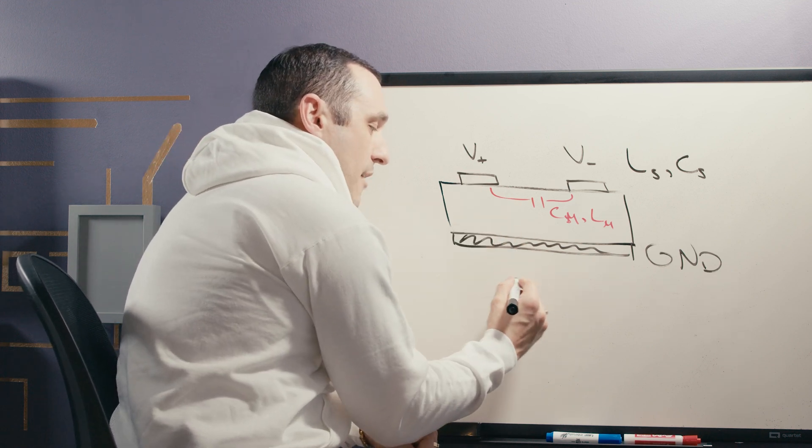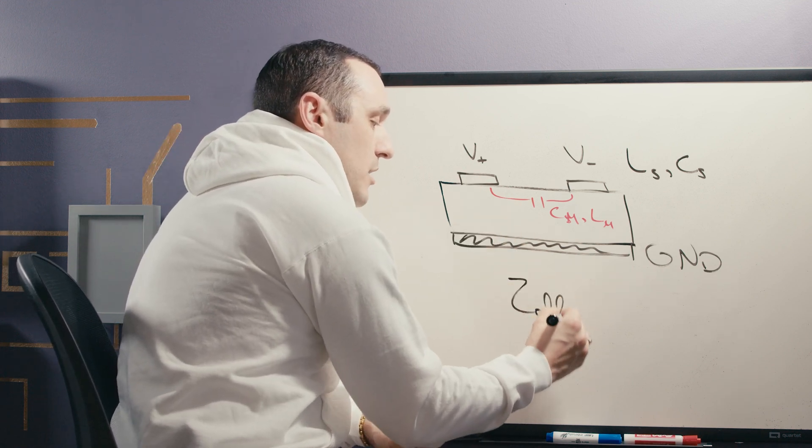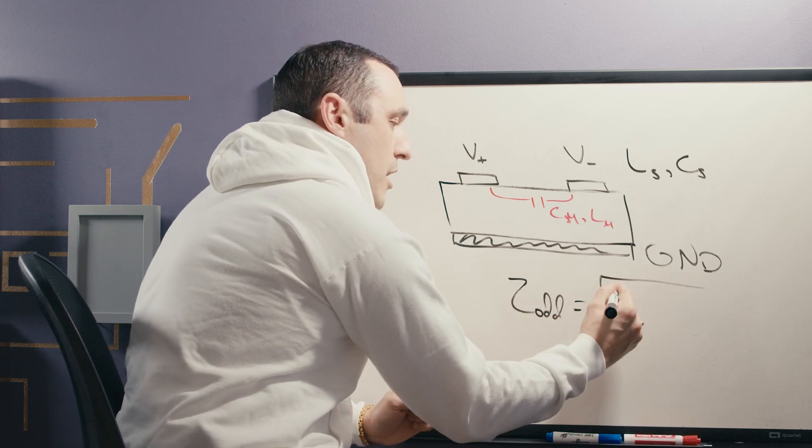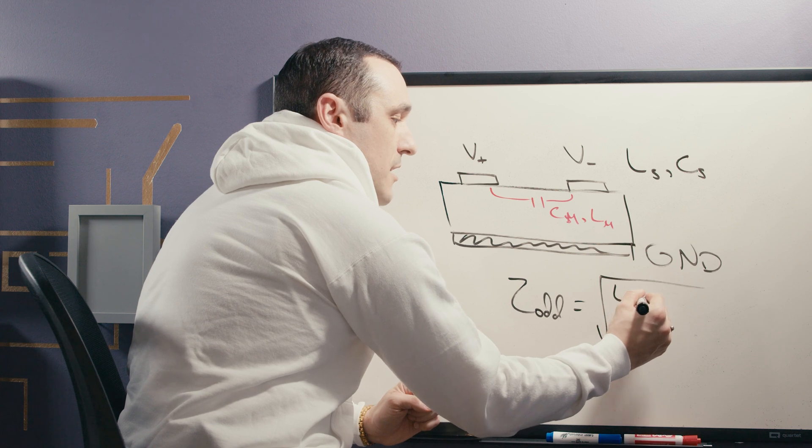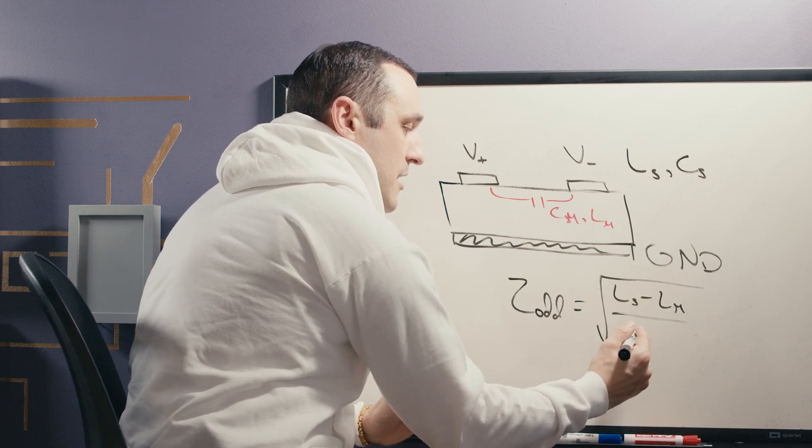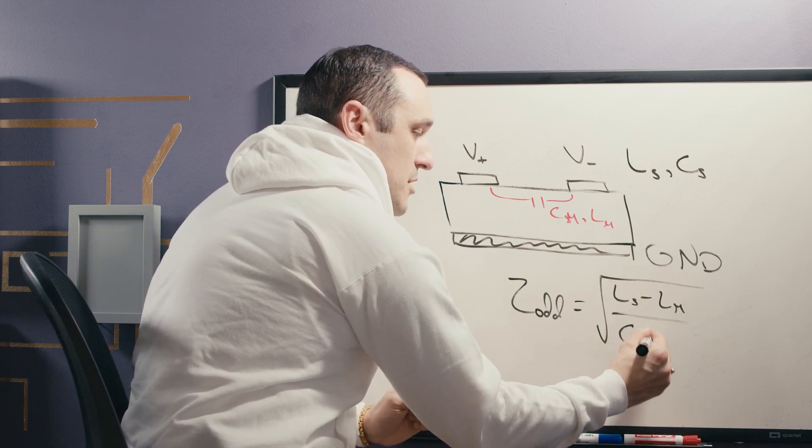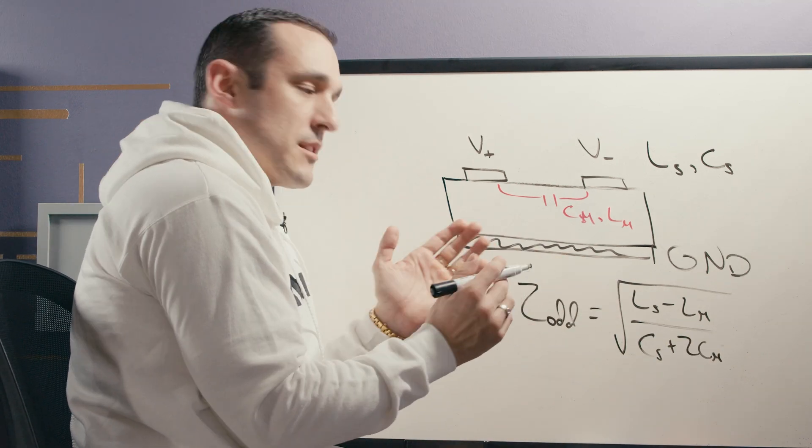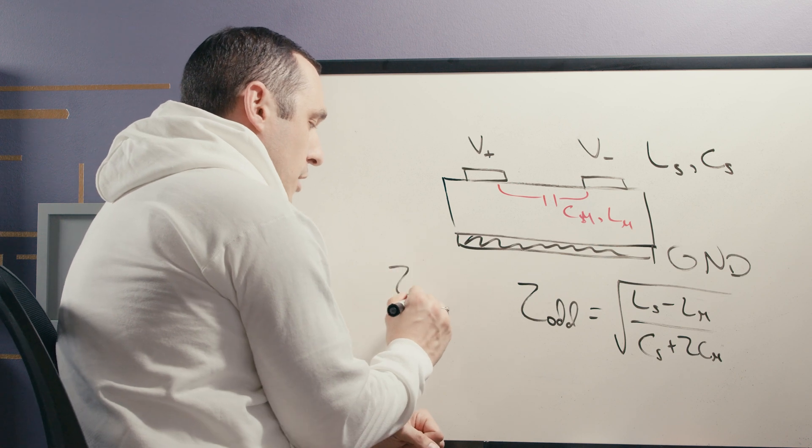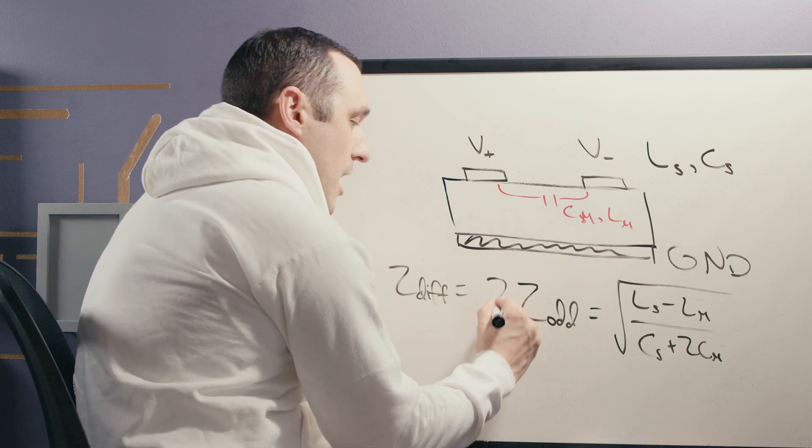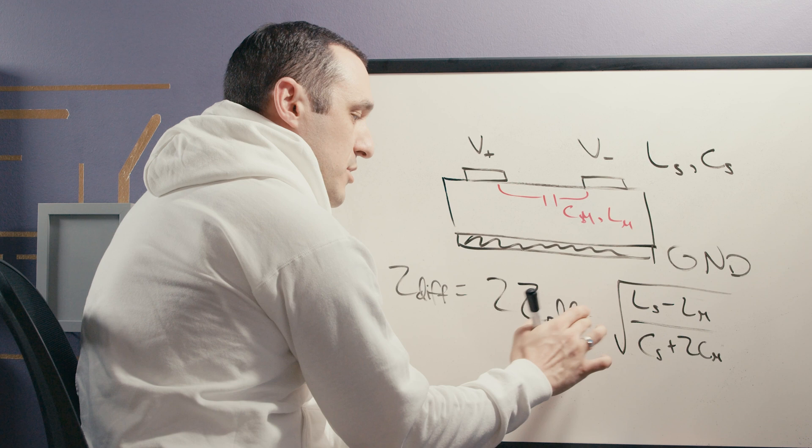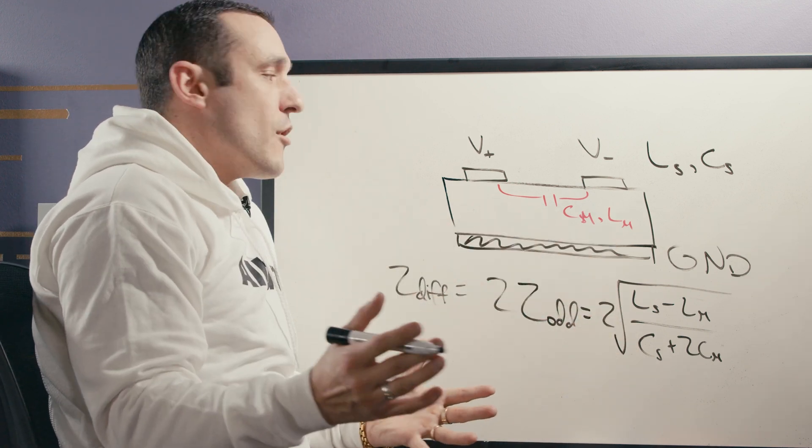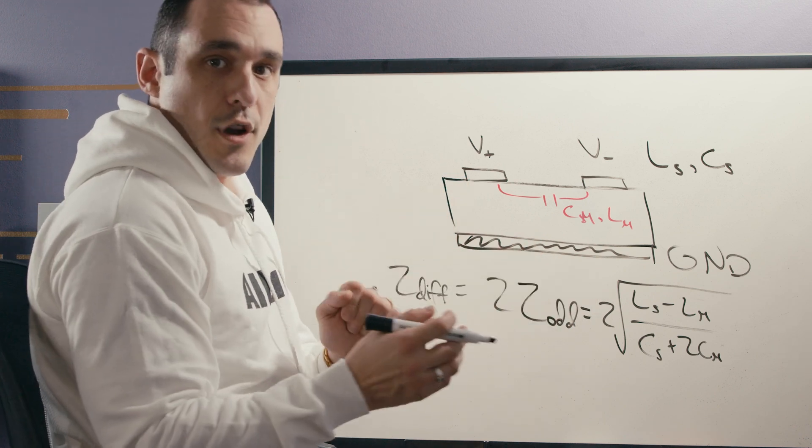Now because we have all of these capacitances and inductances between these traces, each trace is going to have what is called an odd mode impedance. And here the odd mode impedance is given by this square root of the self-inductance minus the mutual inductance divided by the self-capacitance plus 2 times the mutual inductance. So this is the odd mode impedance and the differential impedance is very simple, it is just double this odd mode impedance. So we stick a 2 right here as well and there you go, that's the equation for lossless differential impedance.